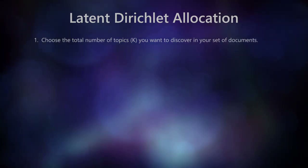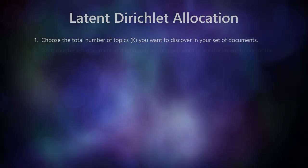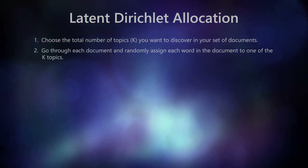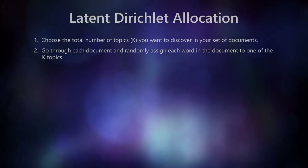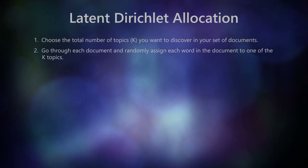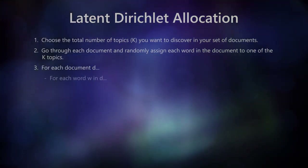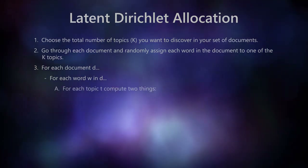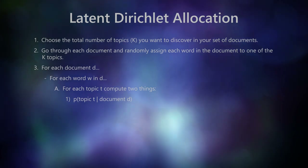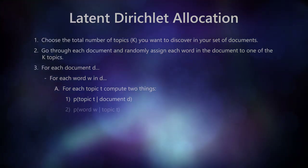Step 1: Choose the total number of topics, k, you want to discover in your set of documents. Step 2: Go through each document and randomly assign each word in the document to one of k topics. Does this sound familiar so far? We've initialized random topics — now let's improve them. Step 3: For each document D, for each word W in the document, for each topic T, we're going to compute two things. Number 1: the proportion of words in document D currently assigned to topic T.